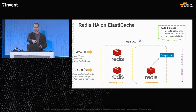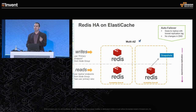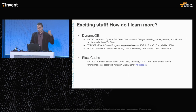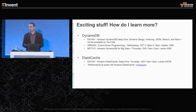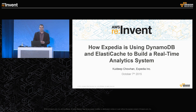If your primary fails and you have multi-AZ enabled, we automatically promote the most up-to-date replica to become the new primary so failover is faster than waiting for a node replacement, and we propagate the endpoint from the old primary to the new one. Your application continues using the same endpoint — nothing needs to change. We'll return to this slide at the end. This has been a high-level overview; there's a lot more to learn about both ElastiCache and DynamoDB. With that, I'll hand it over to Kuldeep to talk about their real-time analytics system built using DynamoDB and ElastiCache.